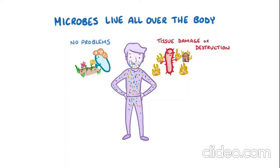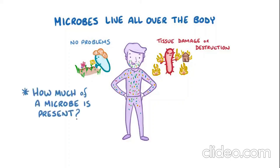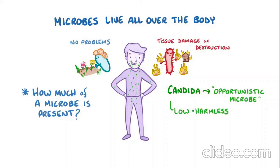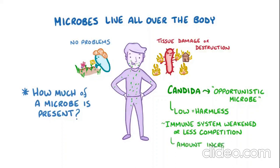An important factor is exactly how much of a microbe is present. Candida is considered an opportunistic microbe. When the amount of Candida is relatively low, it is harmless. But if a person's immune system is weakened, or if there is less competition for Candida, then the amount of Candida can increase — this is called Candida overgrowth.